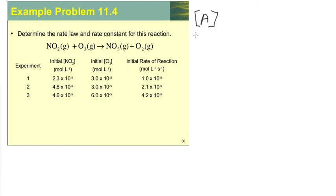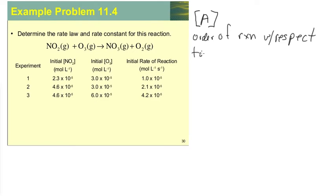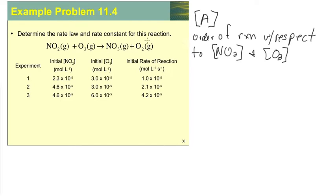What we're going to do is determine the order of reaction with respect to the concentration of nitrogen dioxide and the concentration of ozone. The order of reaction with respect to the concentration of any reactant essentially means how much does the concentration of that substance impact the rate of reaction.